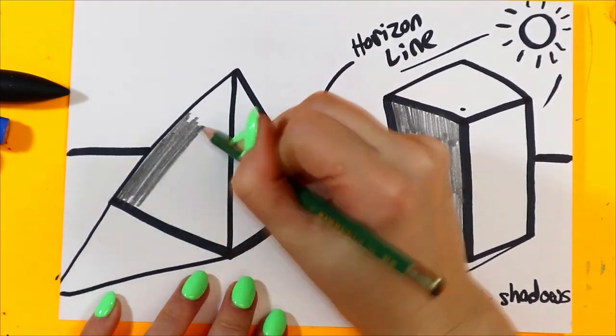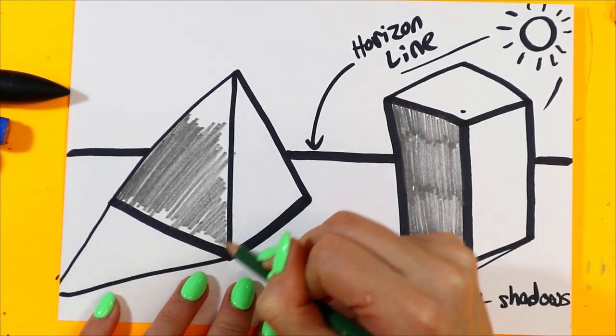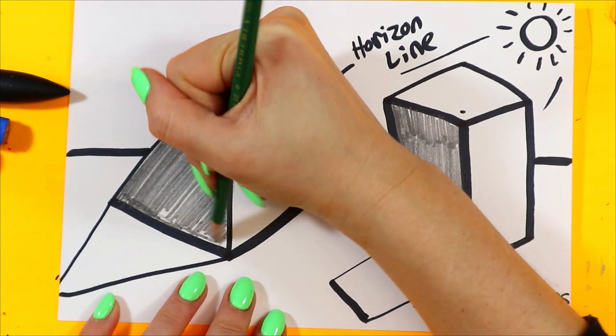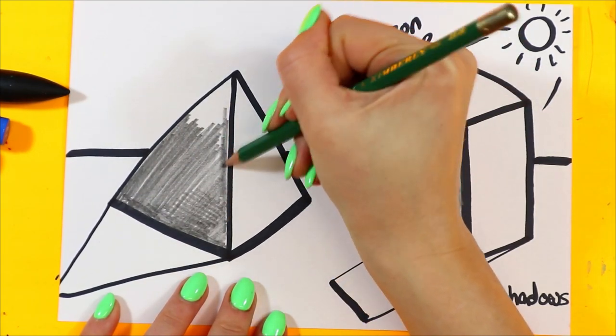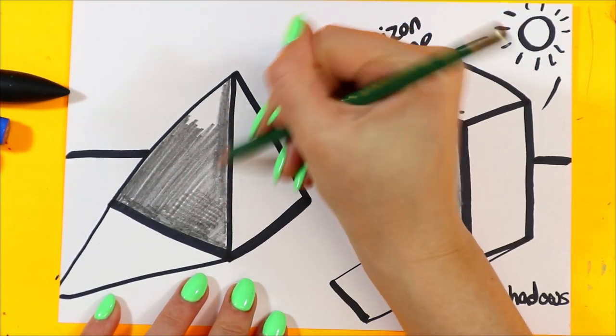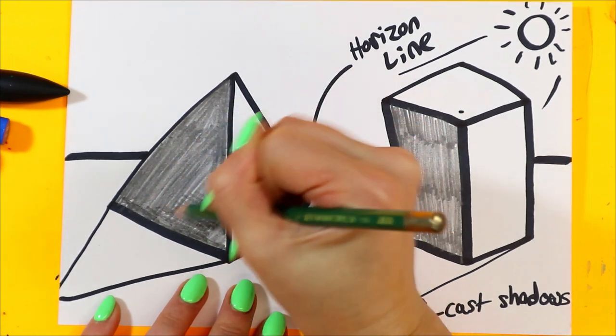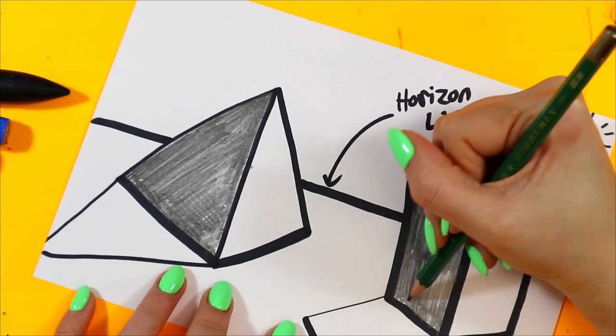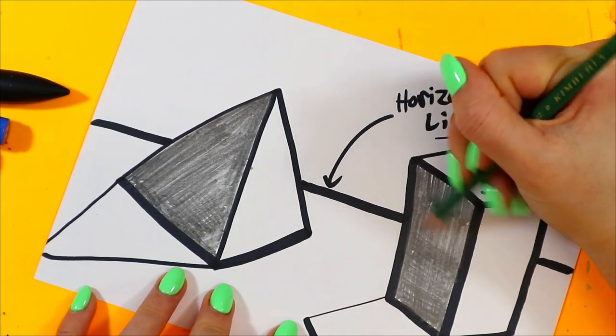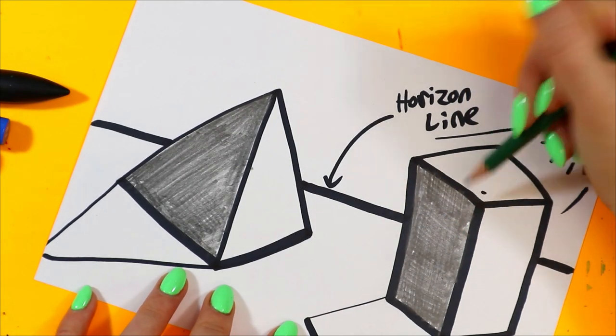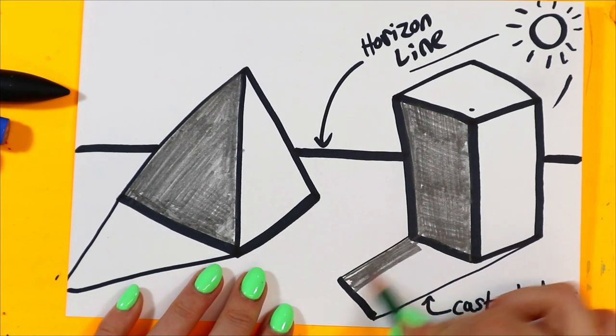And then we're going to do our darkest colors. Same on the pyramid. We're also going to add a cast shadow on the ground, so we'll color that in dark.